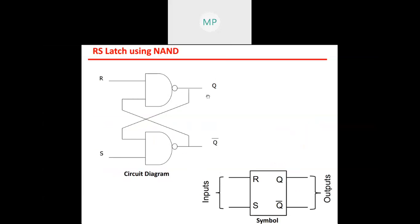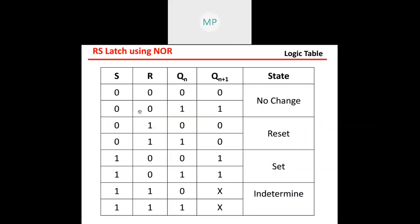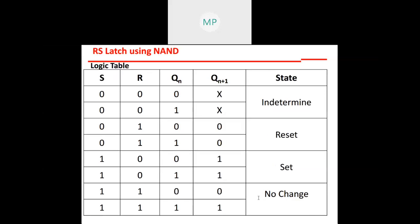Next, RS latch using NAND gates. The symbol is the same — the NOR gate is simply replaced by a NAND gate. The function changes slightly: with NOR gates, input 0-0 gives no change and input 1-1 gives indeterminate. With NAND gates, input 0-0 gives indeterminate and input 1-1 gives no change.